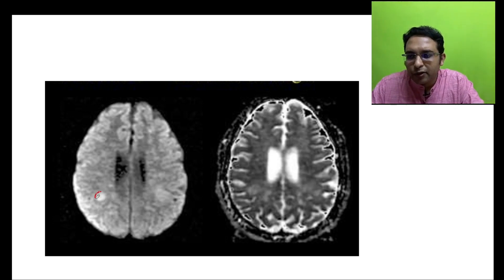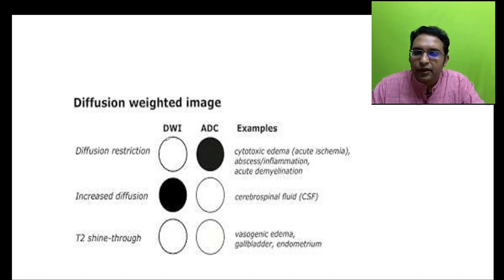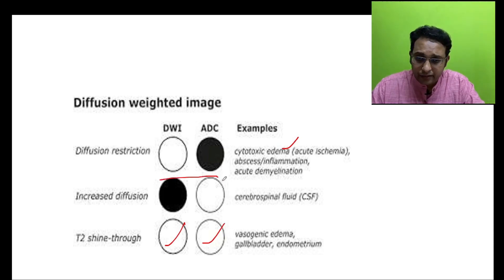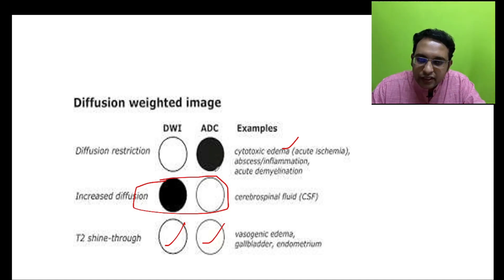To confirm true diffusion restriction: if there is DWI hyperintensity but ADC is also bright (high), it is T2 shine-through, not true restriction. If DWI is hyperintense and ADC is low (dark), it is true cytotoxic restriction as in stroke, inflammation, or demyelination. If DWI is dark with high ADC, there is high diffusivity such as in CSF or vasogenic edema — T2 CSF is white, so it shines through in the background.